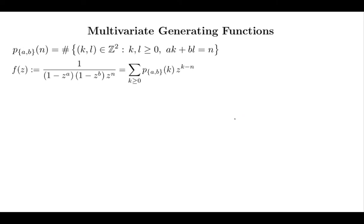Let me remind you what we did in the case of a restricted partition function: with our counting function, we translate it into a generating function, and then our goal was to compute the constant term of this generating function — and this constant term was precisely what we're looking for.